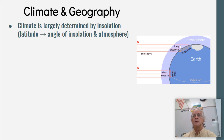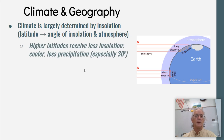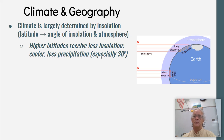That's why the sky appears bluer at the equator than at higher latitudes. Higher latitudes receive less insolation, therefore it's cool with less precipitation — especially at 30 degrees north because of the Hadley cells.